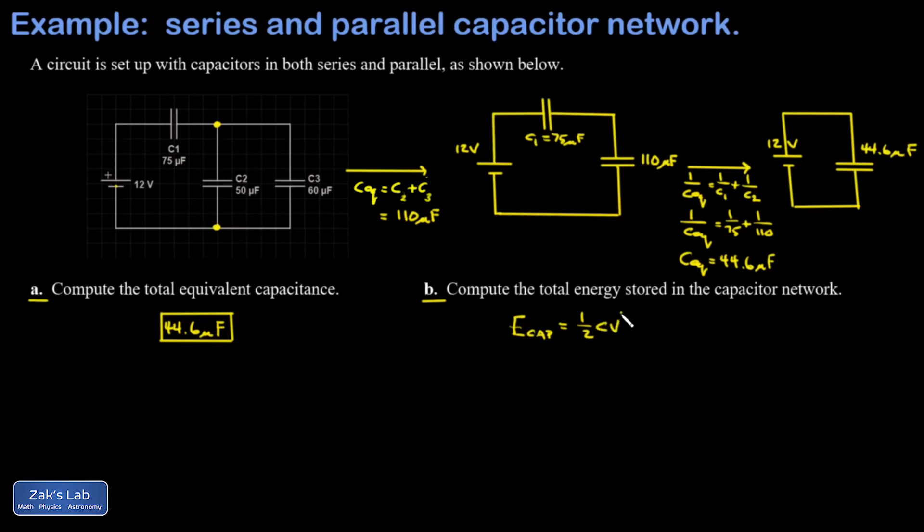Recall that the energy stored in a capacitor is one half CV squared. To three sig figs I get 3210 microjoules, which is a bit awkward, so I'm going to change it into millijoules - that's a factor of 10 to the third difference, so this is 3.21 millijoules.